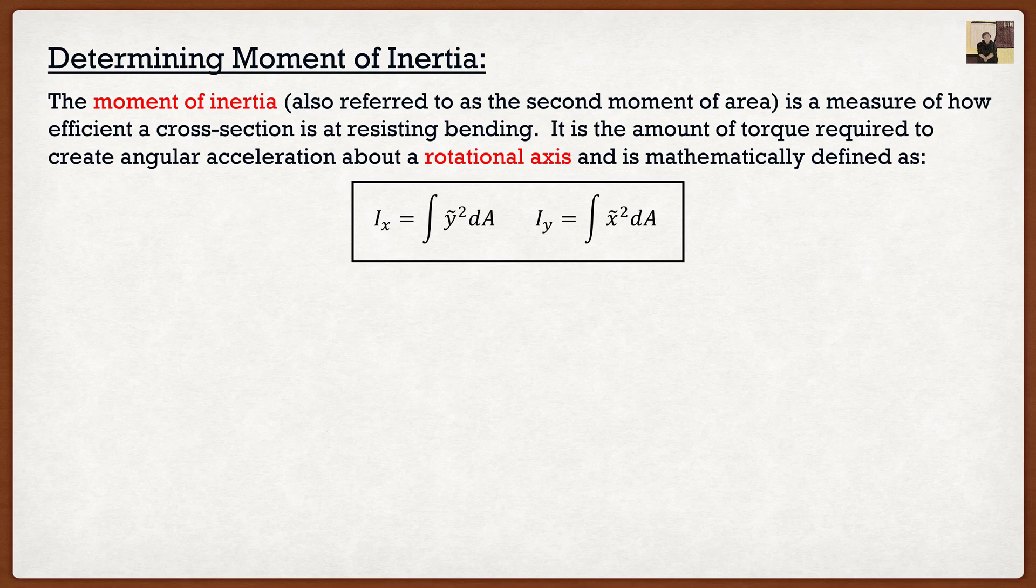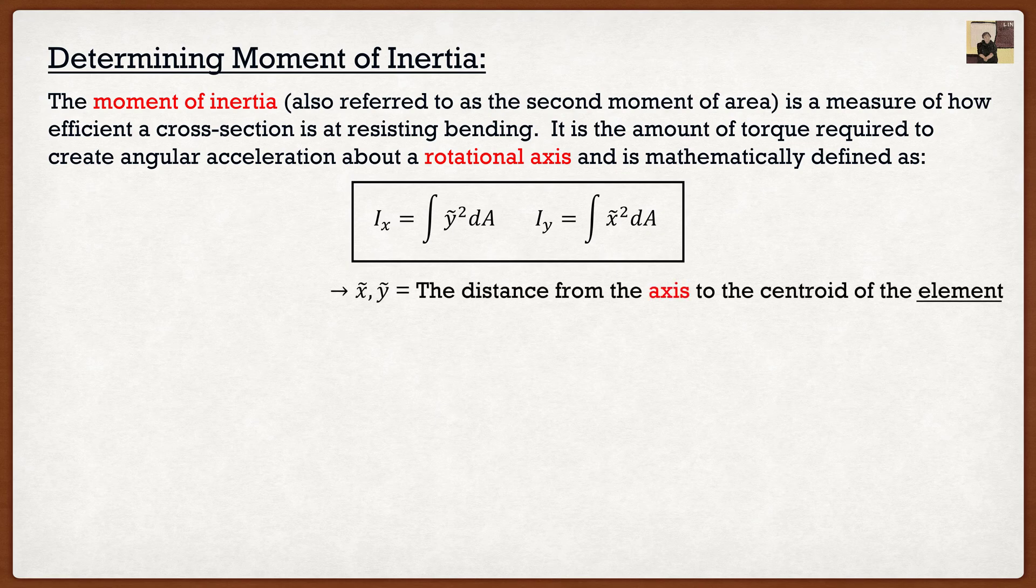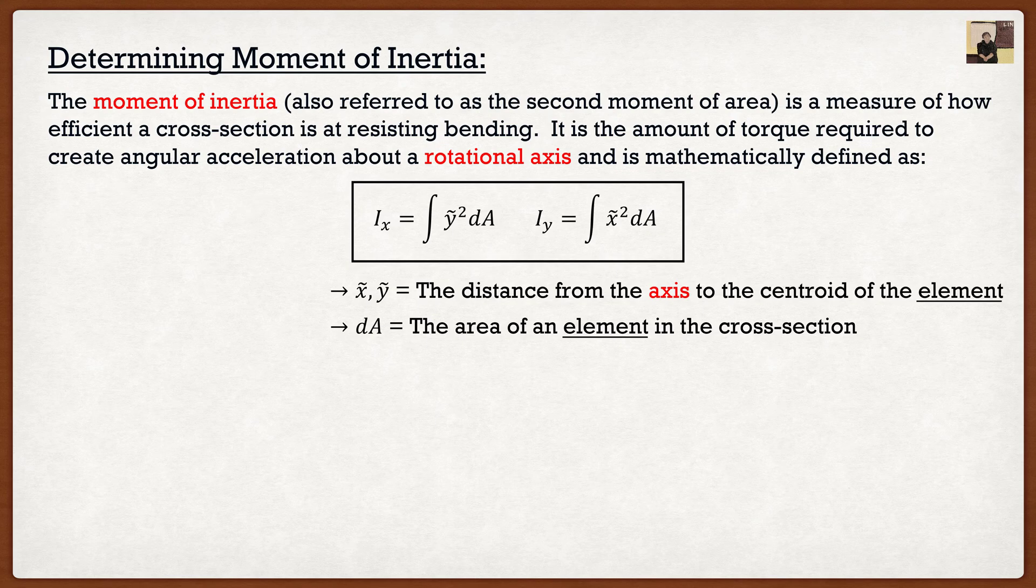Where x squiggle and y squiggle are the distance from the axis to the centroid of the element, and dA is going to be the area of the element.